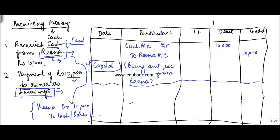When a payment is made as drawings, there is a credit of 10,000 in the cash account because cash went out — a decrease in an asset is credited. So you credit the cash account. Drawings account is debited because drawings is basically a reduction in the capital account. Capital account is a liability from a business perspective, and a decrease in a liability is debited — so a decrease in the capital account is debited to the drawings account.